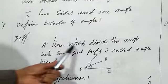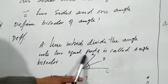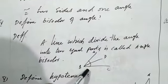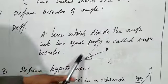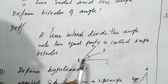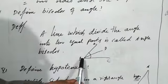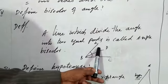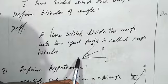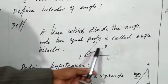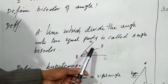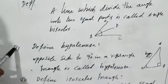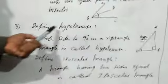An angle bisector is a line which divides an angle into two equal parts. For example, if we have angle ABC, then the line BD divides angle ABC into two equal parts. Therefore, BD is called the angle bisector of angle ABC.